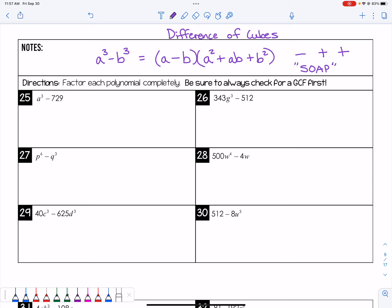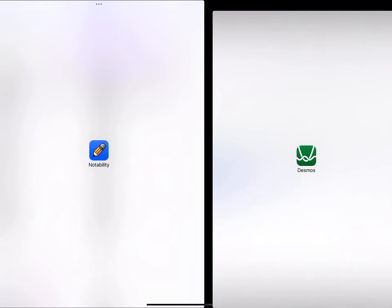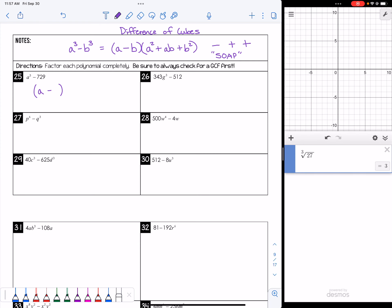So let's just look at two examples of this type. So if I see I have a³ - 729, I need to get the cube root of a³, which is a, minus the cube root of 729, which most of us do not have memorized, so let's type that in.